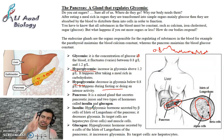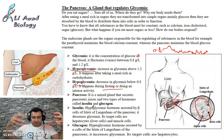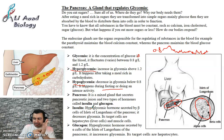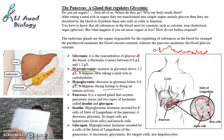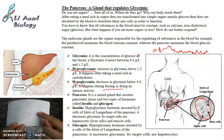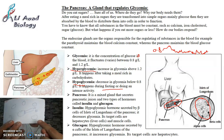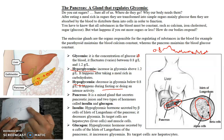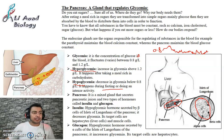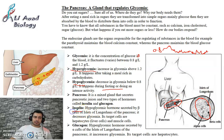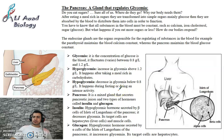These regions contain two different types of cells. Alpha cells and Beta cells are found within the Islets of Langerhans, distributed throughout the pancreas. Beta cells secrete a hormone called insulin. Alpha cells secrete a hormone called glucagon.